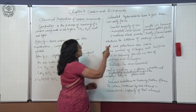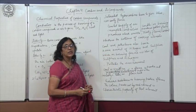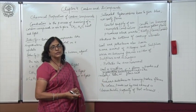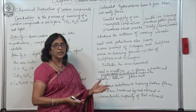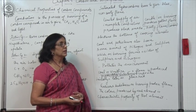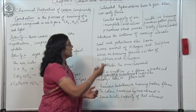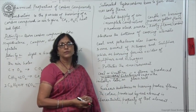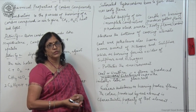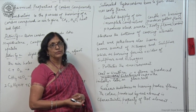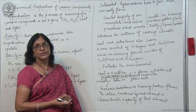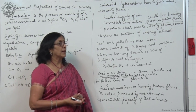Incomplete combustion of the fuel occurs if the supply of air is limited, due to which carbon remains unburned. Carbon particles are left behind without burning; they rise and produce a sooty flame and a yellow light. That is why when we burn a candle, it produces a lot of light due to incomplete combustion — a yellow-coloured flame — and is used to illuminate the house at night whenever there is no electricity.